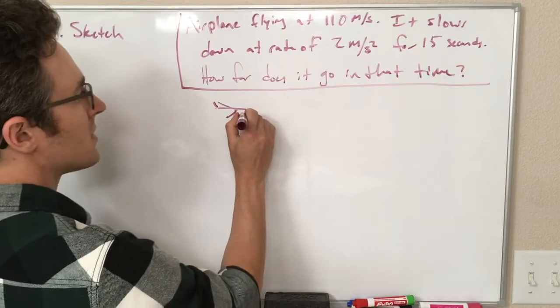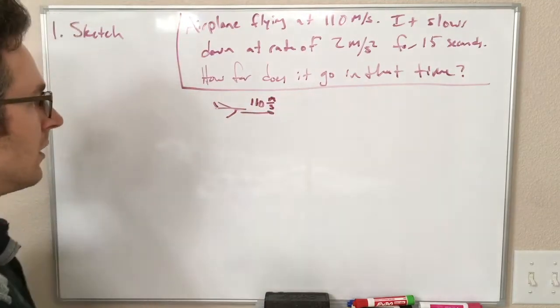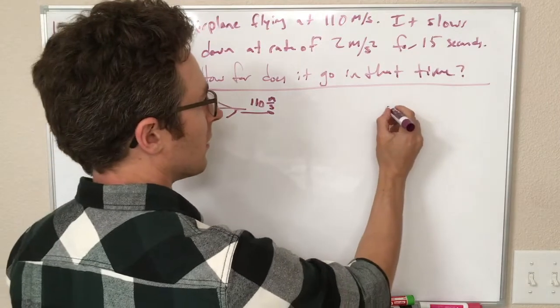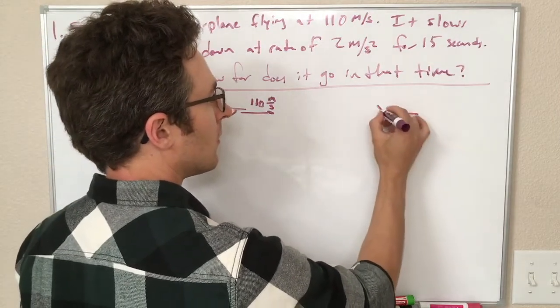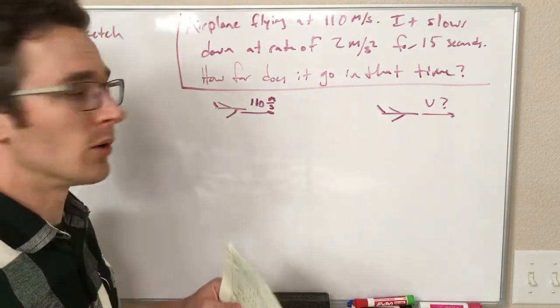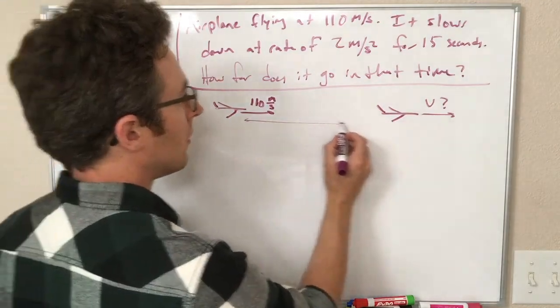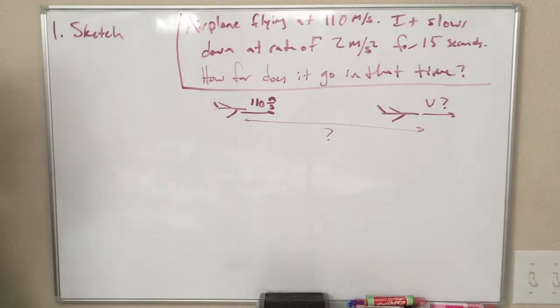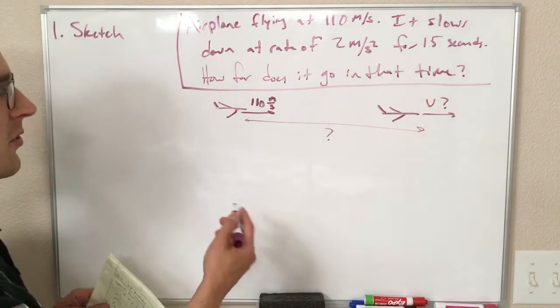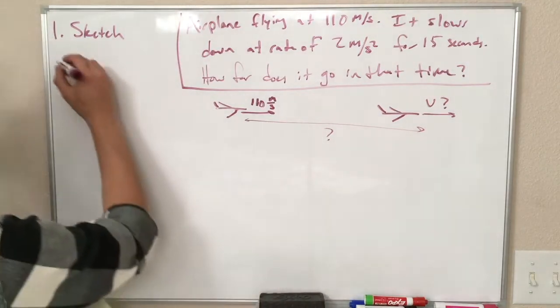So it's flying at 110 meters per second. We'll say it's going to the right. Airplanes aren't good at flying backwards. And when it gets over here, it is still going to the right at some different velocity. We don't know what that is. And we want to know this distance. So we've drawn our little sketch. We don't have all of the variables up there, but we have some of the relevant ones, the ones that fit into the picture nicely.